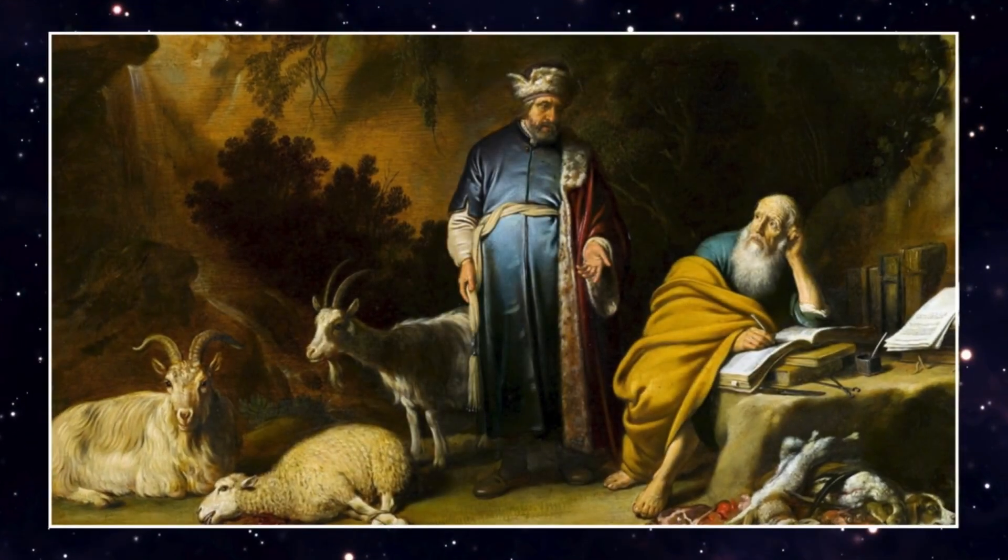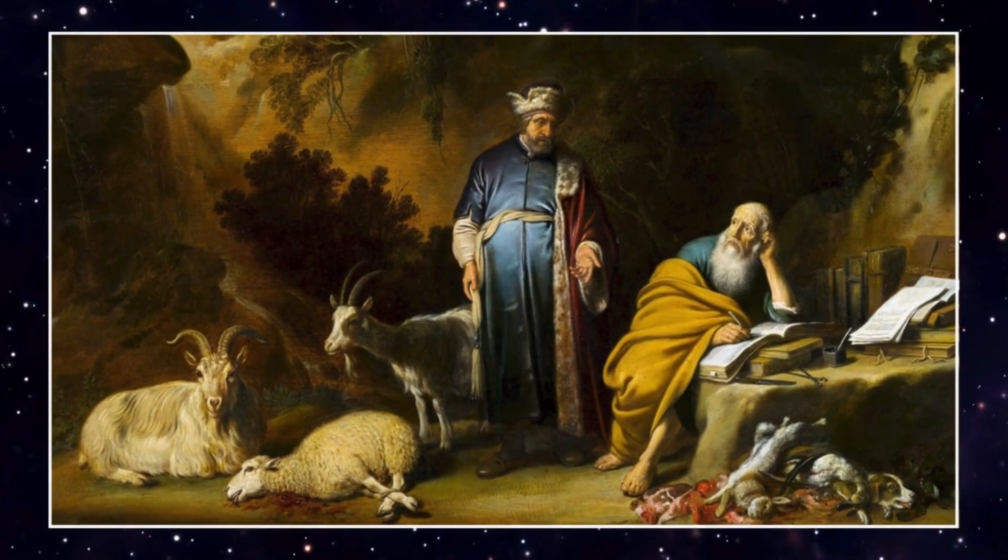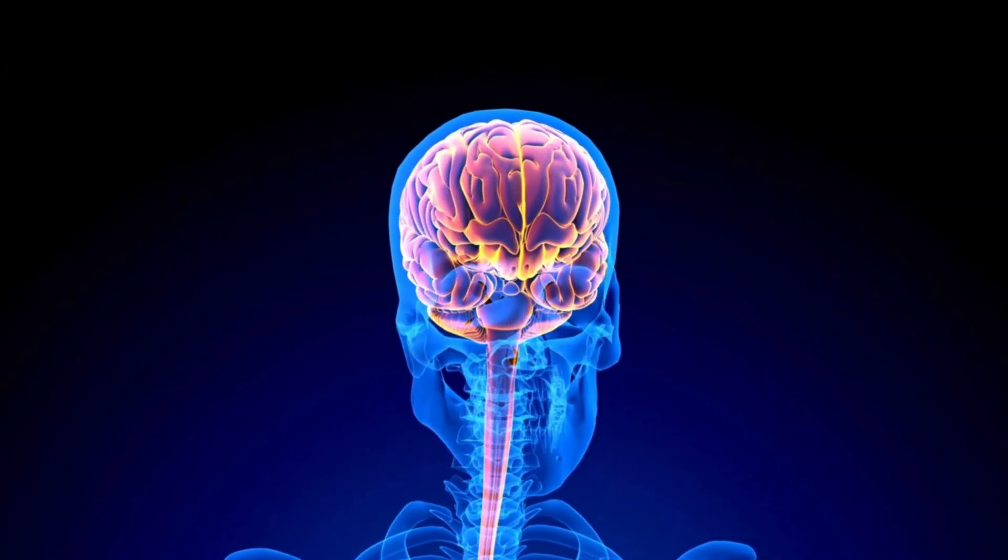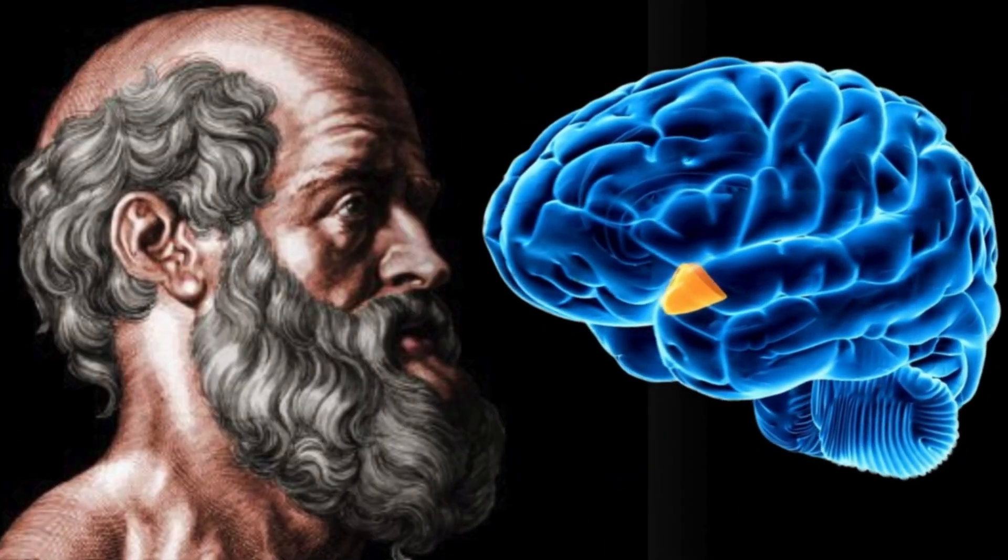Meanwhile, in Greece, thinkers like Hippocrates began to challenge the idea that emotions came from the heart. He claimed the brain was the seat of intelligence and sensation. But even that was just the beginning.